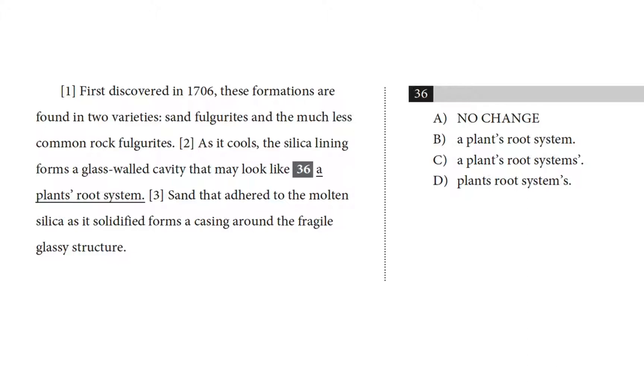So what is the sentence saying here? What belongs to what? Okay, so the cavity looks like a plant's root system. In other words, it looks like the root system of a plant. So that root system belongs to a plant. So we need to find the choice that correctly punctuates the idea that this is a plant's root system.